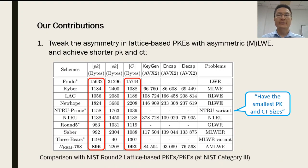After observing the asymmetry in the design of lattice-based schemes, we propose the asymmetric MLWE problem and exploit its asymmetry to obtain public key encryptions with shorter public keys and ciphertexts. Compared to the NIST Round-2 submissions at category 3 security, we achieve the smallest public key and ciphertext size, both are less than 1000 bytes.